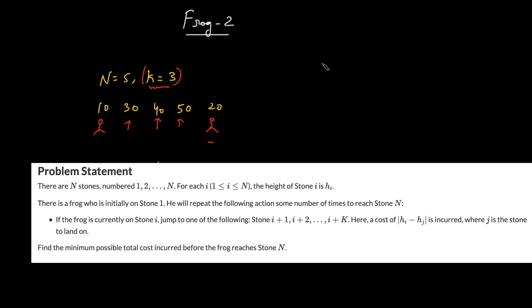So whenever you move from one index i to index j, the cost is nothing but the absolute of a[i] minus a[j].